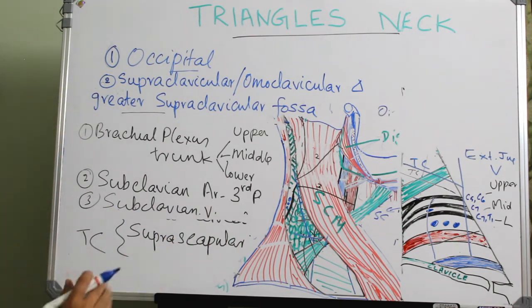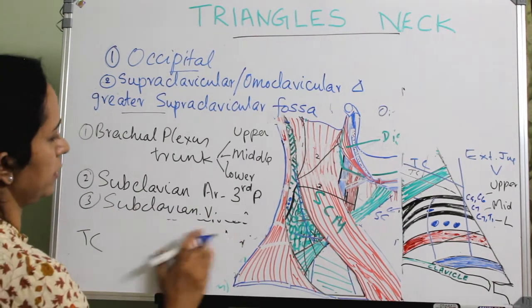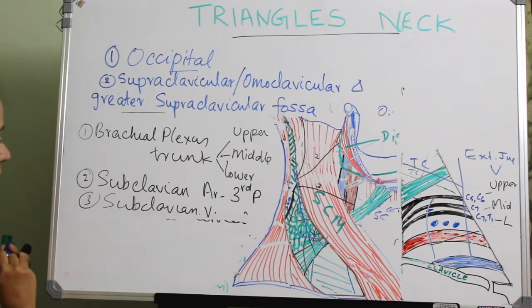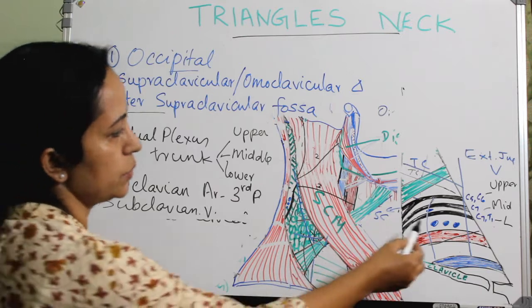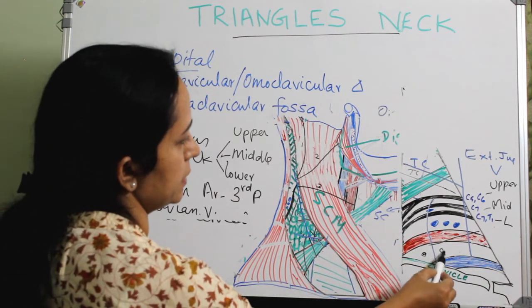Another important content is the supraclavicular lymph nodes. There are many supraclavicular lymph nodes present in this triangle.